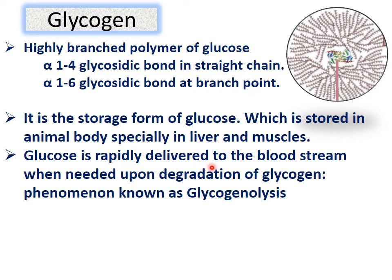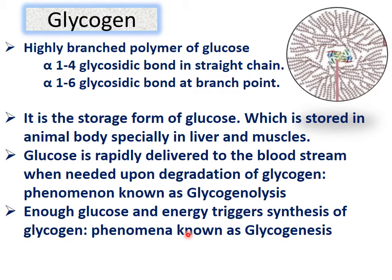Glucose is rapidly delivered to the bloodstream when needed upon degradation of glycogen — that phenomenon is known as glycogenolysis. When energy is needed in the cells, this glycogen breaks down into glucose, and that process is known as glycogenolysis. When there is enough glucose in the body, the energy triggers synthesis of glycogen, and that is known as glycogenesis.